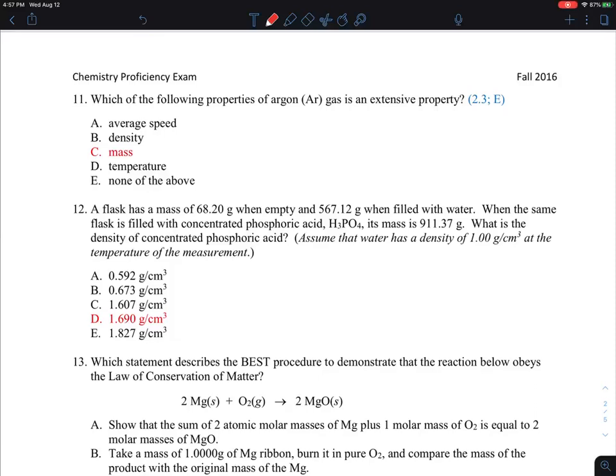Let's solve number 11 to number 15 on this GCRA, RPI Chemistry 1. The next question is which of the following properties of argon is an extensive property. It's just to get familiar with the language. What's the opposite of an extensive property? This is what we call the intensive properties.